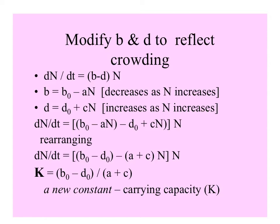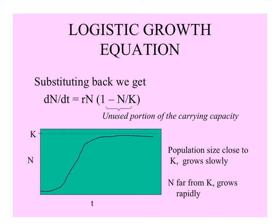We have rearranged things and we can define a new constant K, the carrying capacity. Why it doesn't start with C, I don't know — I guess it's from the language it was first described in. The carrying capacity is the birth rate minus the death rate over the sum of the two constants, and it is defined for each species as the number of individuals of that species that the environment can support.